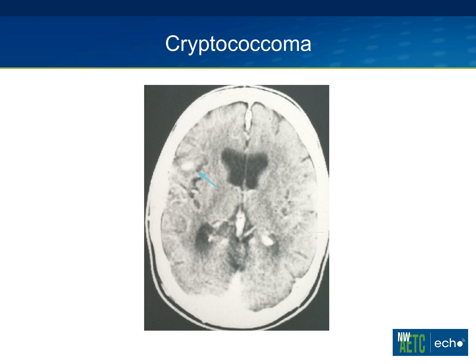More obvious cryptococcomas — globs of organisms and inflammatory cells — can also be seen on CT scan. These usually resolve with therapy and don't require surgical intervention.